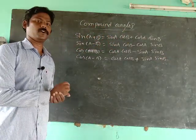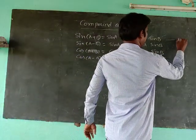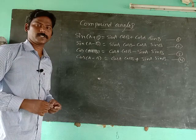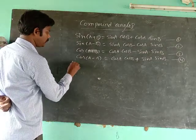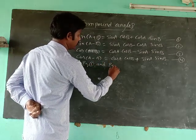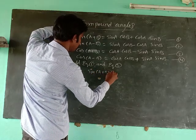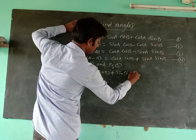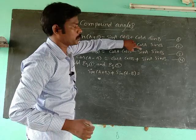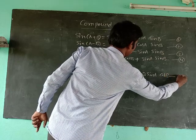By using these four formulas we will derive some new formulas. Let it be equation 1, equation 2, equation 3, equation 4. Now add equation 1 and equation 2: sin(a+b) + sin(a-b) equals 2·sina·cosb. The cosine terms cancel, giving us this new formula.